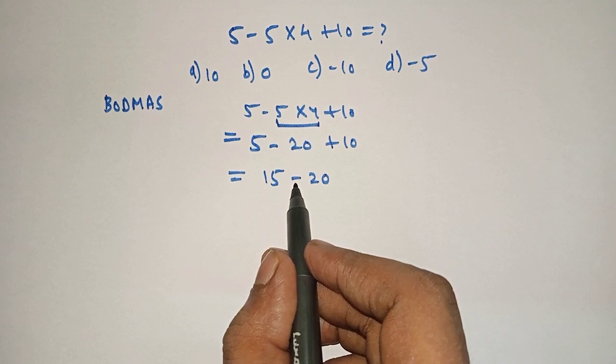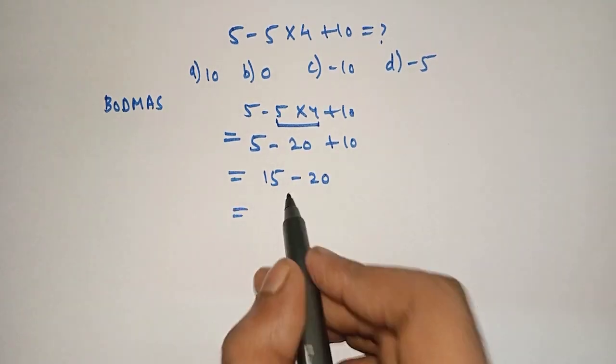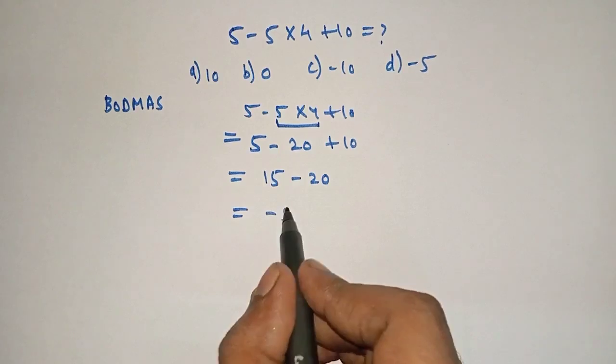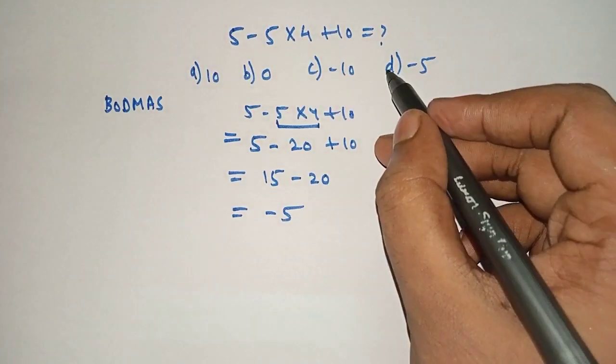Here only minus is there. Therefore 15 minus 20 is minus 5 which is option d.